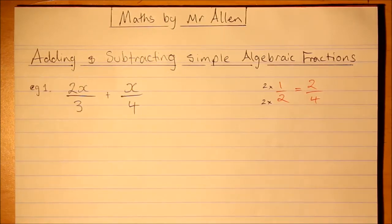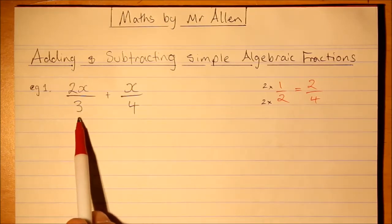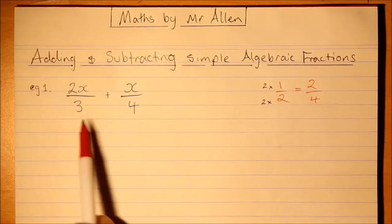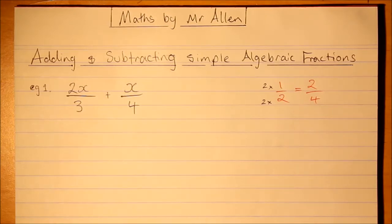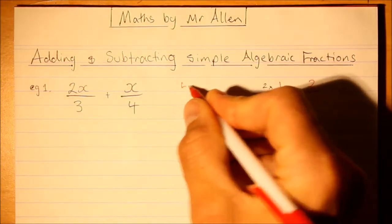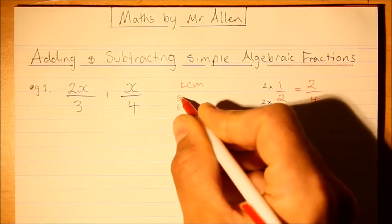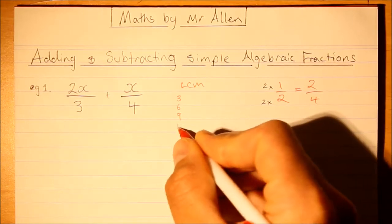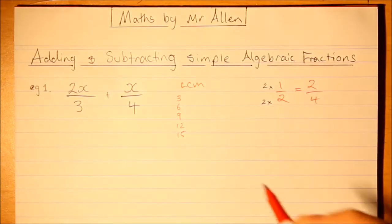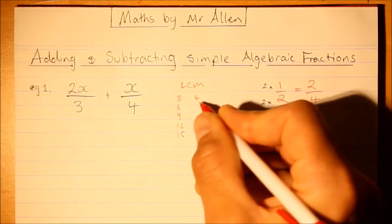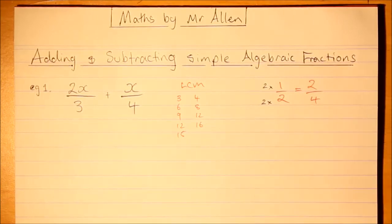What you need to do is look at the denominators and we need to find the lowest common multiple of these denominators. The multiples of three are three, six, nine, twelve, fifteen, etc. And the multiples of four would be four, eight, twelve, sixteen, etc. What's the lowest common one? It's the twelve.